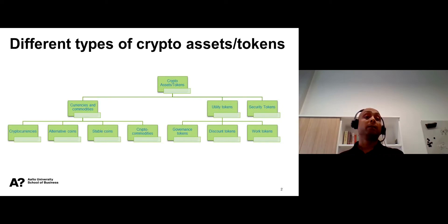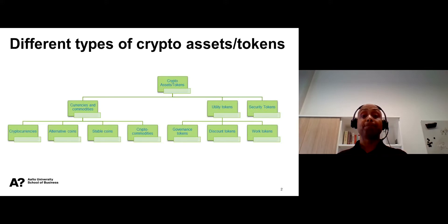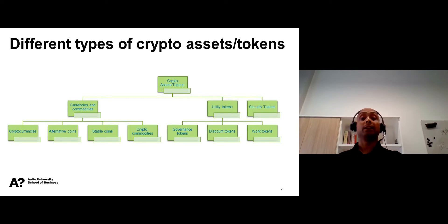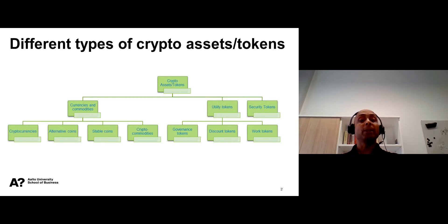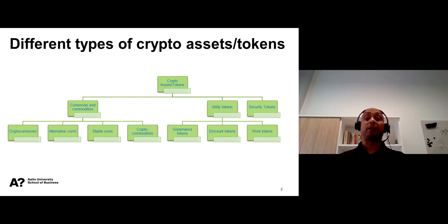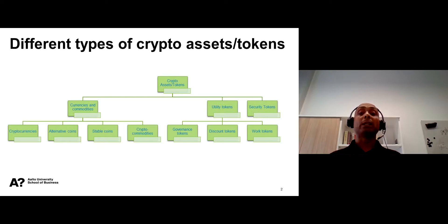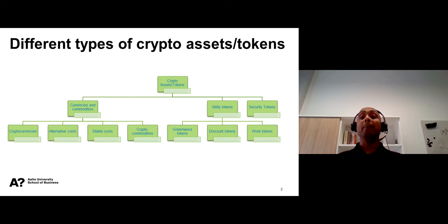Fiat currencies are traditional currencies like the United States Dollar and European Euro, which are issued by central banks and backed by governments. Some notable examples of fiat-based stablecoins are Tether and True USD. Some stablecoins not only peg their market value to a fiat currency but also back it through a reserve of crypto assets.